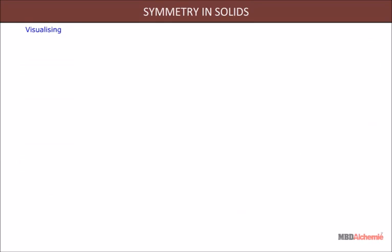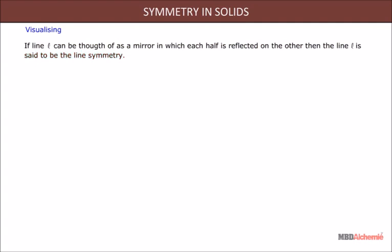Here we will learn about visualizing. If line L is considered as a mirror in which each half is reflected on the other, then the line L is said to be the line of symmetry. In a pentagon, there are five lines of symmetry which divide the pentagon into equal halves.